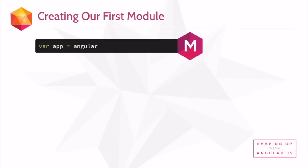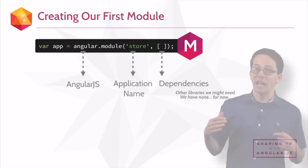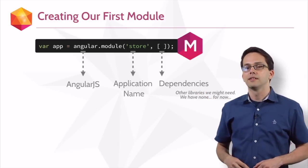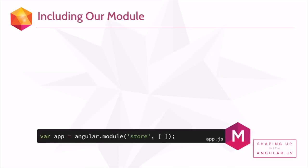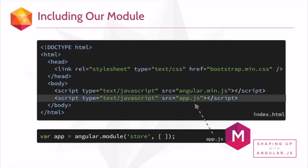We're going to write: var app — that's our application — equals angular — that's the AngularJS library — dot module, because we're creating a new module. We give it a name, in this case 'store', and then in that array syntax, we define dependencies. We don't have any dependencies yet, but we still have to send in an empty array. This piece of code is going to live inside an app.js file, so we're going to need to include that in our HTML.